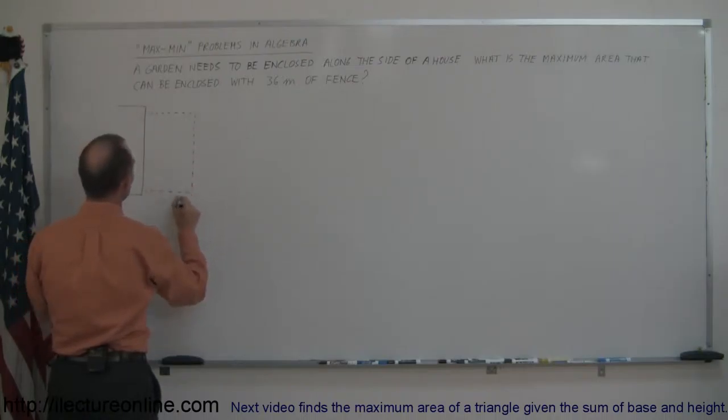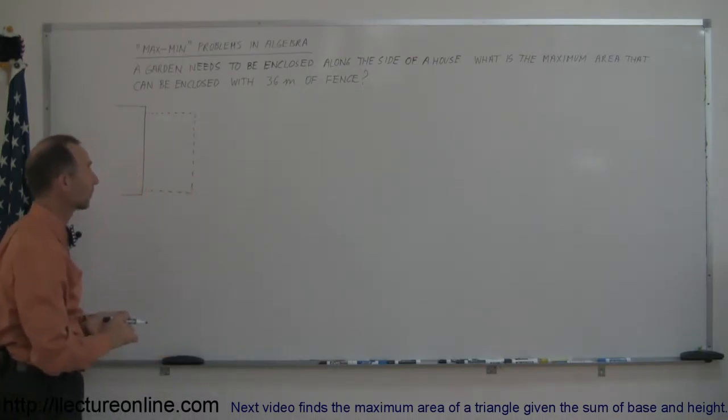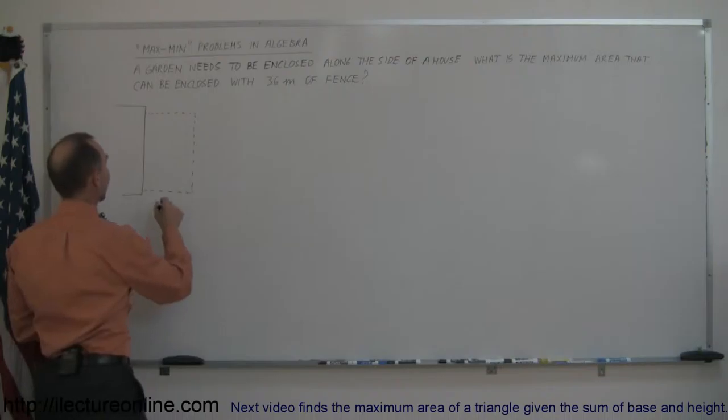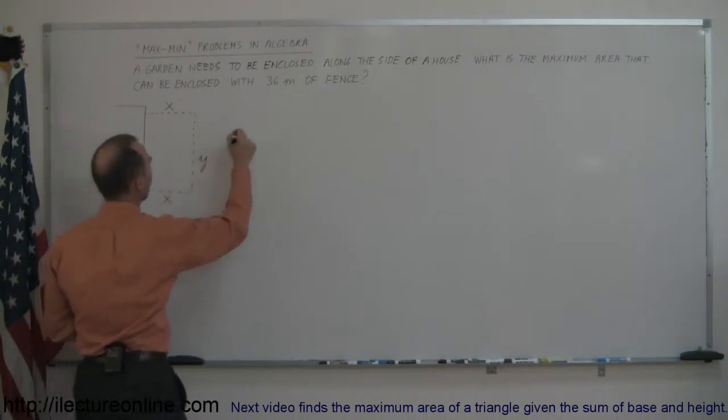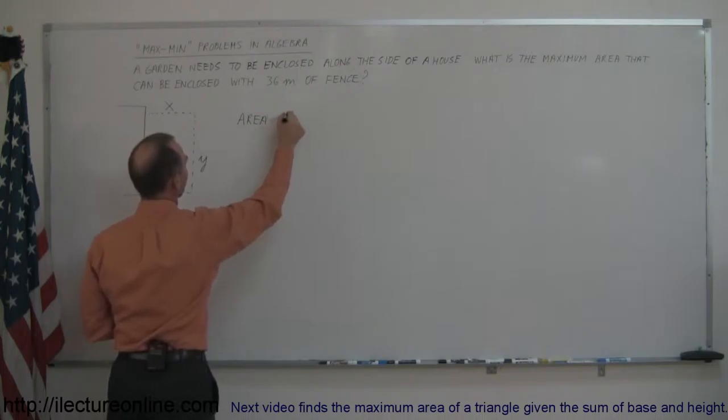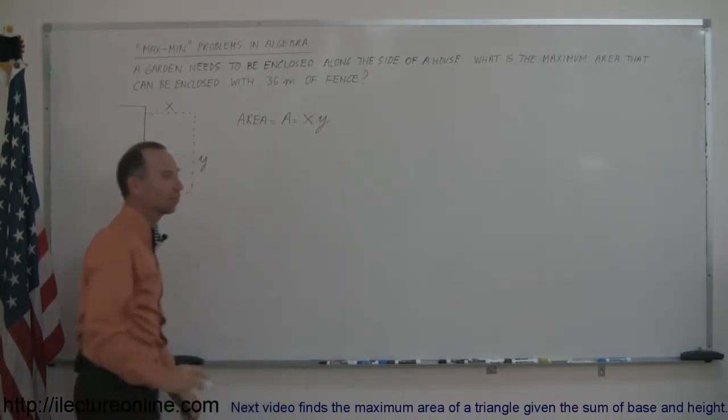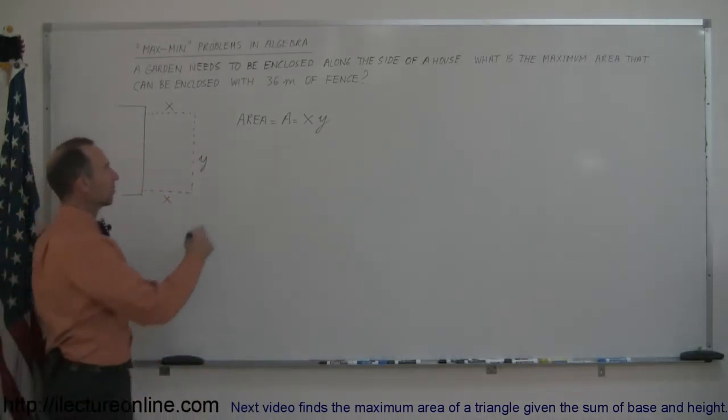And then we're going to enclose a garden with a fence like this. And of course, we don't need to use a fence on this side, we already have a house. So for three sides of the area that we're going to enclose, we need to use the fence, and we only have 36 meters of it. Let's say that this side over here is x, and this is x, and this is y. We can then say that the area is equal to x times y, the length times the width. And we want to maximize the area.